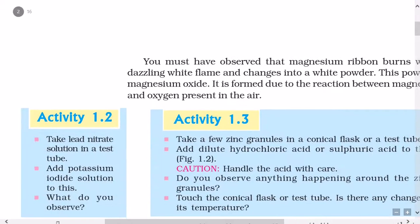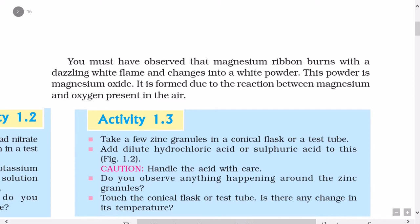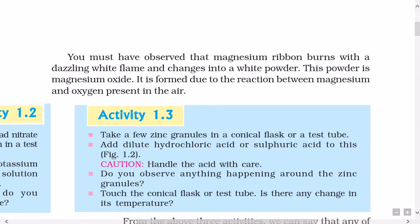You must have observed that magnesium ribbon burns with a dazzling white flame and changes into a white powder. This powder is magnesium oxide. It is formed due to the reaction between magnesium and oxygen present in the air.